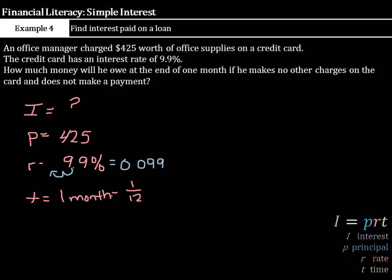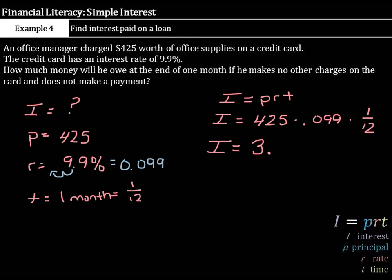Now, let's put this in to our interest formula. I equals PRT. The interest we're solving for still. The principal is $425. The rate is 0.099. And our time is 1 twelfth. When you multiply these together, our interest being charged for the one month is 3.50625.